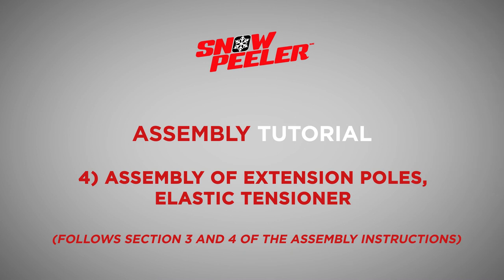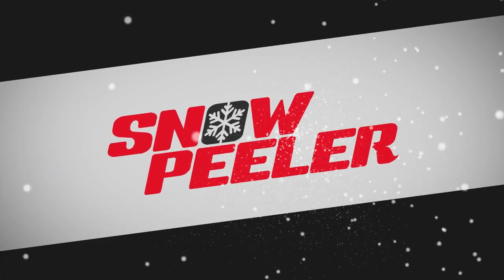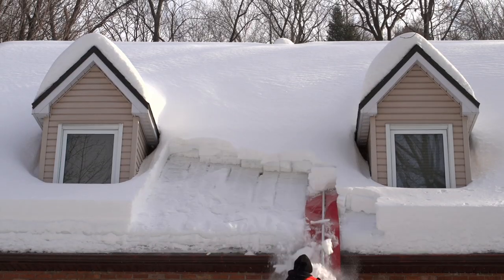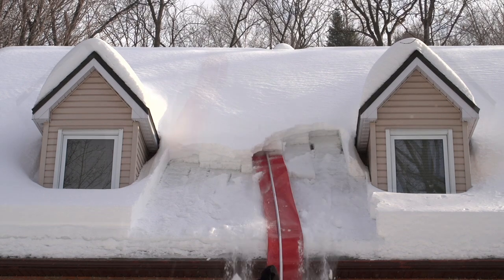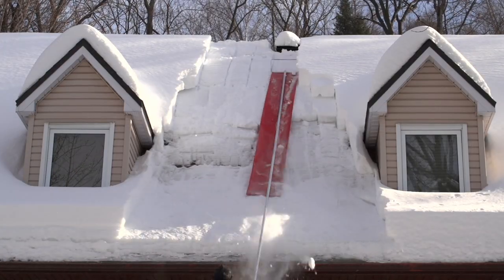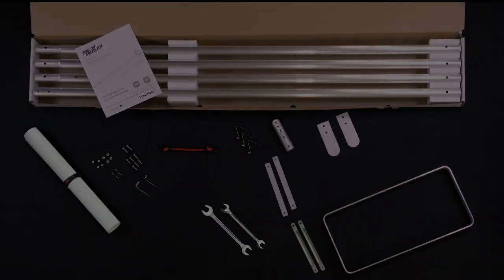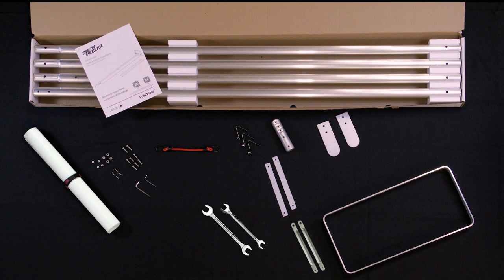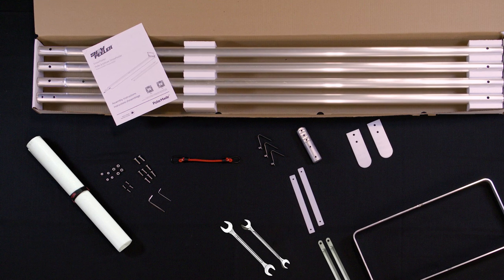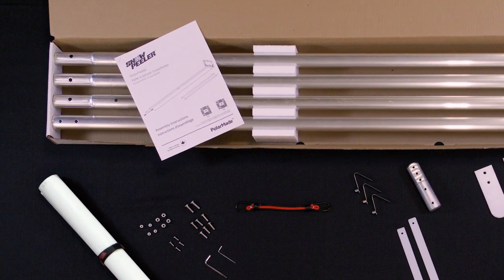We're almost finished assembling your Snow Peeler. In this section, we'll assemble the extension poles. The extension poles can be added one at a time to increase your total reach so that you can effectively remove snow from your roof. Each aluminum pole is 5 feet long. You'll notice that one end of the pole has a reduced diameter which is inserted into the larger end of a second pole.